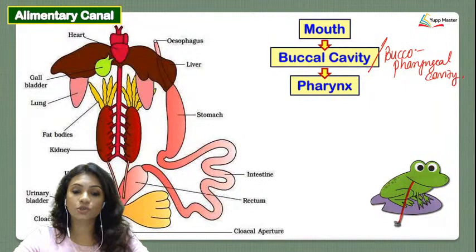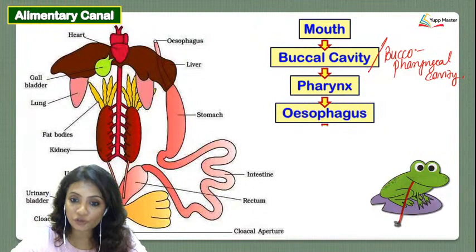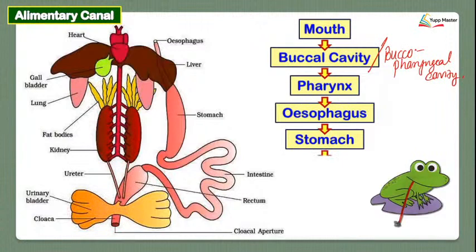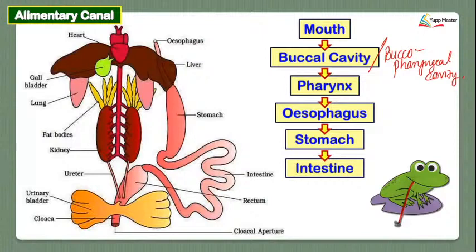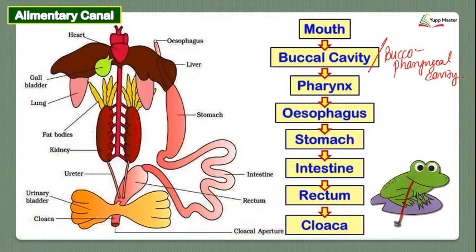The buccal cavity leads to the pharynx, then the tube called the esophagus, and then the stomach. From the stomach, the intestine opens — there is a small intestine and a large intestine. The intestine opens into the rectum, the rectum opens into the anus, and in frogs we call this region directly the cloacal region. The cloaca is a common opening for the digestive, reproductive, and excretory systems.